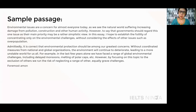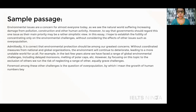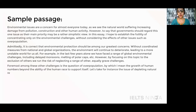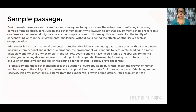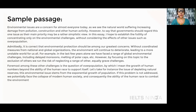Coming to the third paragraph, I am going to introduce my second main point. Here you can see written: 'Foremost among these challenges is the question of overpopulation, by which I mean the growth of human numbers beyond the ability of the human race to support itself.' For instance, the issue of depleting natural resources stems from the exponential growth of population. If this problem is not addressed, we potentially face the collapse of modern human society, and consequently, the ability of the human race to combat the environmental damage which has already taken place.